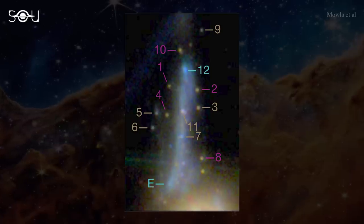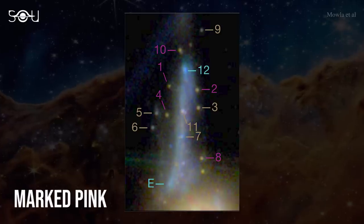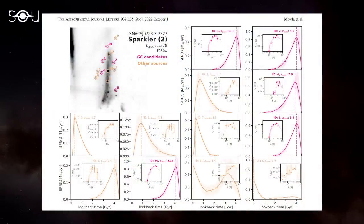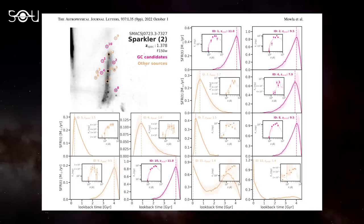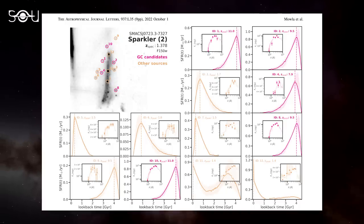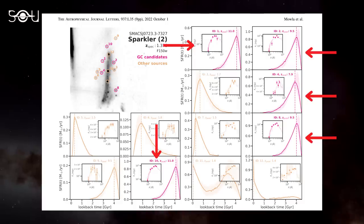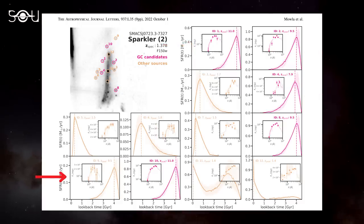Of the remaining 9 objects, the researchers confirmed that 5 are definitely globular clusters, while others are extended objects contaminated with light. The most important figure in the research paper plots the star formation history of all 12 objects around the Sparkler galaxy. Pink points and curves show the location and star formation history of individual globular clusters, while orange is used for the remaining extended sources. The x-axis is the look-back time and the y-axis is the star formation rate. The star formation rate of every confirmed globular cluster peaked in the early universe around the same time. Object number 9 displays a similar trend, but since its light is contaminated, it cannot be confirmed as a globular cluster.